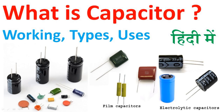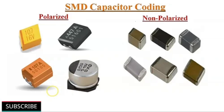This smoothing effect results in a more stable DC voltage supplied to the rest of the circuit. Compensating for load changes: In circuits with dynamic loads, the current drawn by the load can change rapidly. Capacitors can respond quickly to these changes by providing or absorbing charge, helping to maintain a steady voltage level. This is particularly important in applications such as motor control, where sudden changes in load can occur.